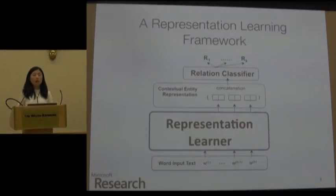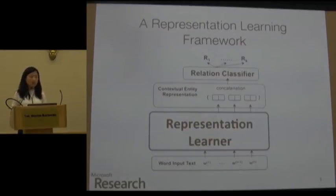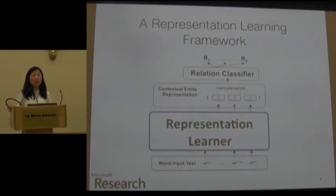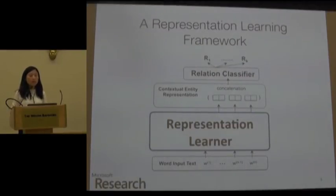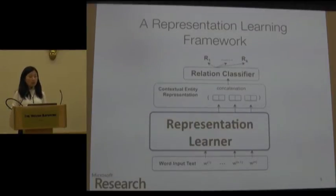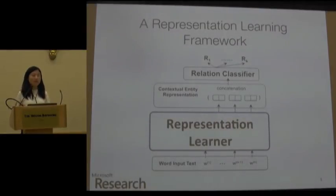With awareness of these challenges, we propose a representation learning framework for this problem. On the abstract level, it's straightforward: we have an input, and we pass it through a representation learner to produce contextual entity representations. We want the representation learner to be powerful enough that we can use only the entity representations as features for the relation classifier to make the final prediction, and the whole framework is trained end-to-end.